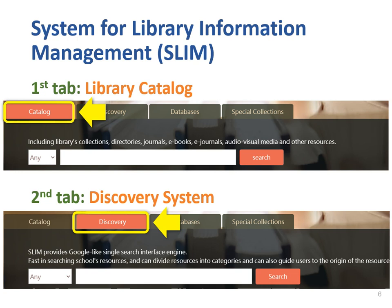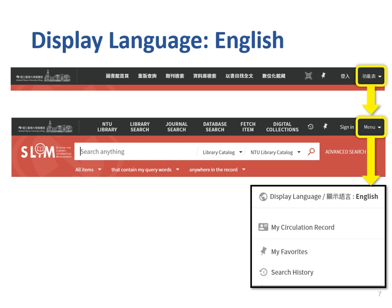To start searching, there are four tabs on the search area. The first tab is Library Catalog, which includes the library's collection, journals, e-books, e-journals, audio-visual media, and other resources. The second tab is Discovery System, which provides a Google-like single search interface engine. So what's the difference between them? We will introduce it later.